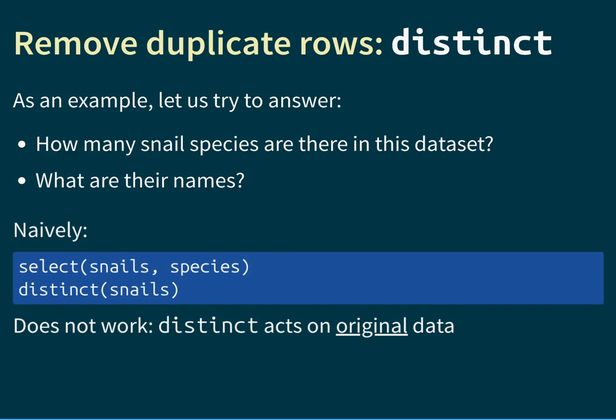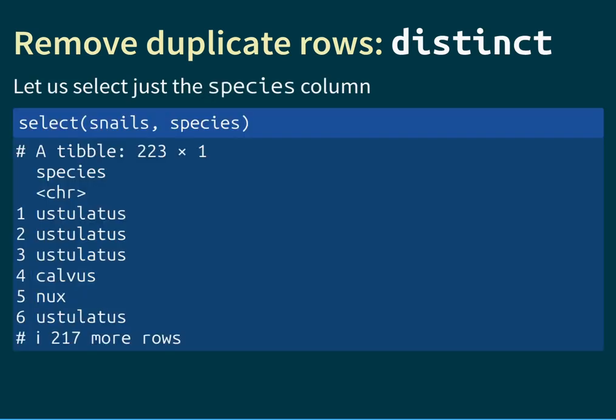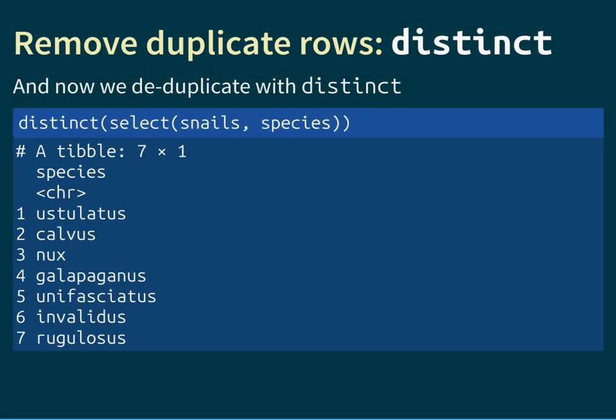Instead we need to do this step by step. First we select only the species column: select(snails, species). Then we wrap the distinct function around that: distinct(select(snails, species)). First select evaluates to a table with a single species column, then distinct is applied to that result, throwing away duplicates. We end up with a table of only seven rows — each corresponding to a single unique species — and we can see their names: Eustulatus, Calvus, Nux, Galapaganus, Unifasciatus, Invalidus, and Rugulosis.